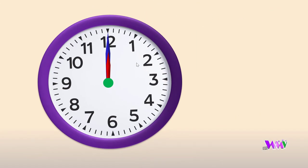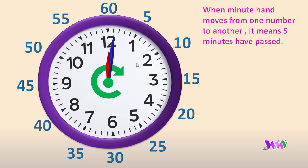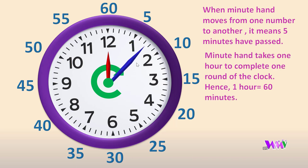The hands of the clock move from left to right. The numbers on the dial also indicate the number of minutes. When the minute hand moves from one number to another, it means five minutes have passed.